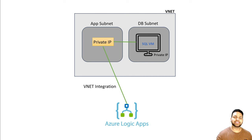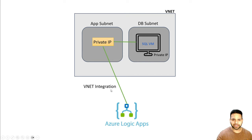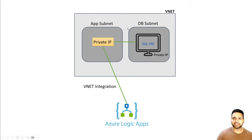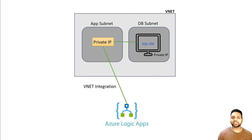To make it successful, you need to do the VNet integration of the Azure Logic App. For VNet integration, a dedicated subnet will be created — we can name it anything, but a dedicated subnet with a minimum net mask of /27 has to be created. When the VNet integration is done, a private IP will be assigned to the Azure Logic App. Once that private IP is assigned, the connectivity between the private IP of the application subnet and the private IP of the SQL virtual machine can happen because they are part of the same virtual network. The NSG allows connection within the virtual network by default, but if you have a firewall in place, you need to allow connectivity from the application subnet to the database subnet over port 1433, which is the SQL port.